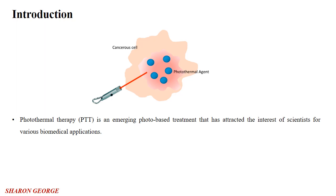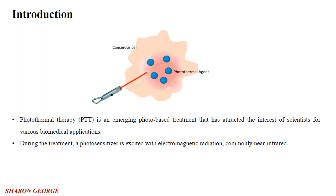Photothermal therapy is a photo-based treatment that is used for many medical conditions, especially cancer therapy. During the treatment — here we can see in this picture — a photo-sensitizer or photo-thermalizer is injected into a particular mutated area, especially for cancer treatments. By using a laser source, we can excite these particles or photo-thermalizer. What will happen during the emission is that, due to the non-radiative decay, it will produce heat. That heat is used for the thermal therapy.